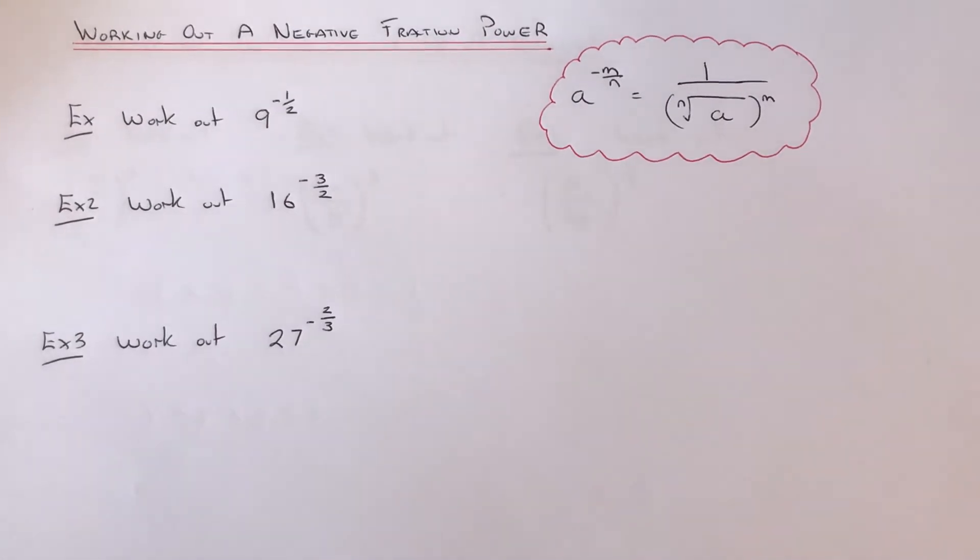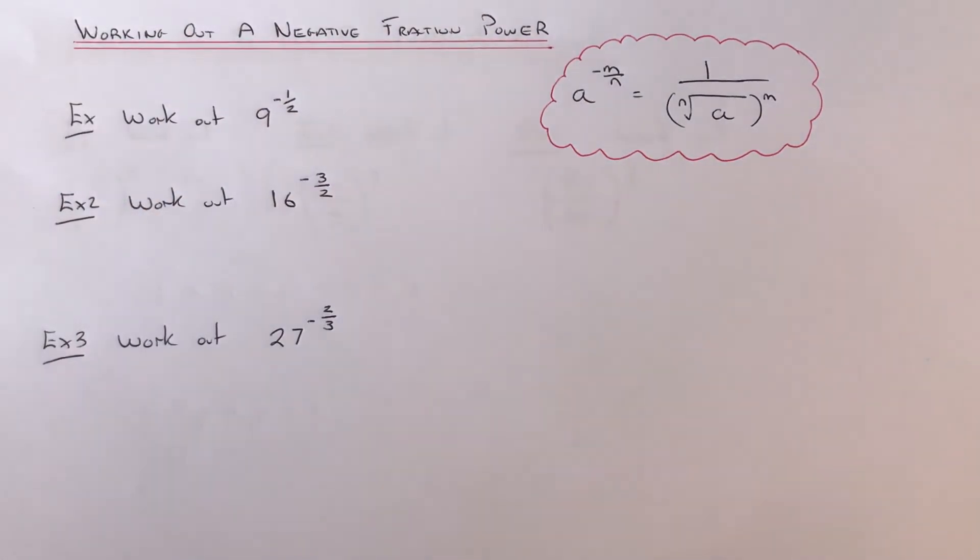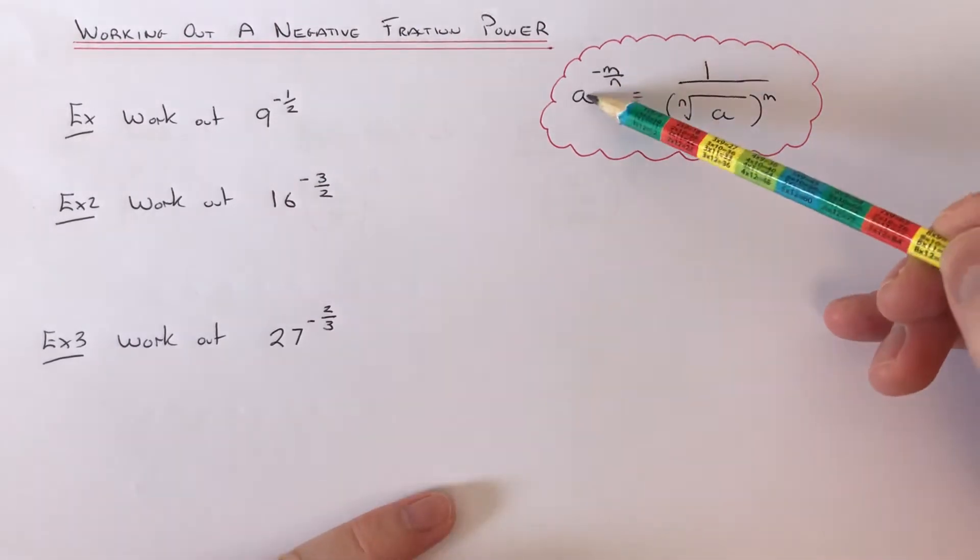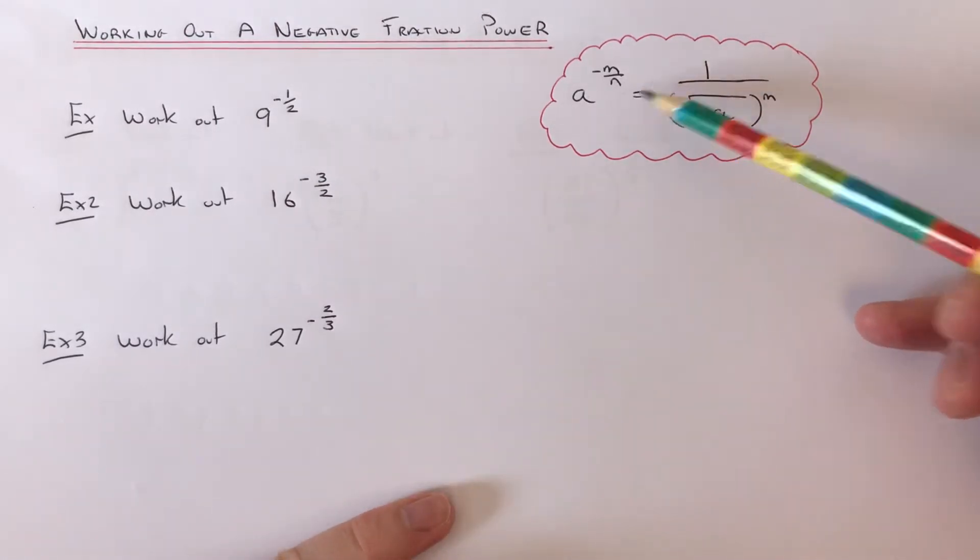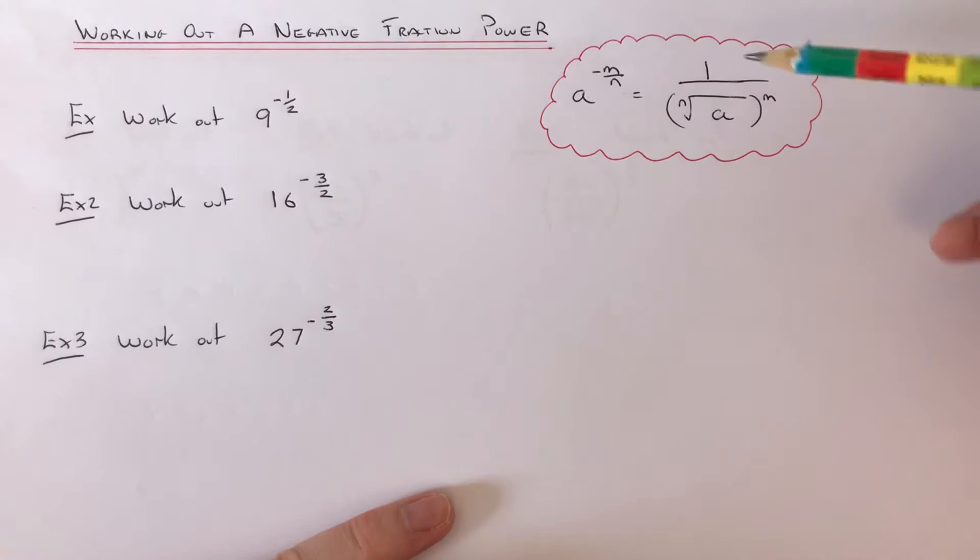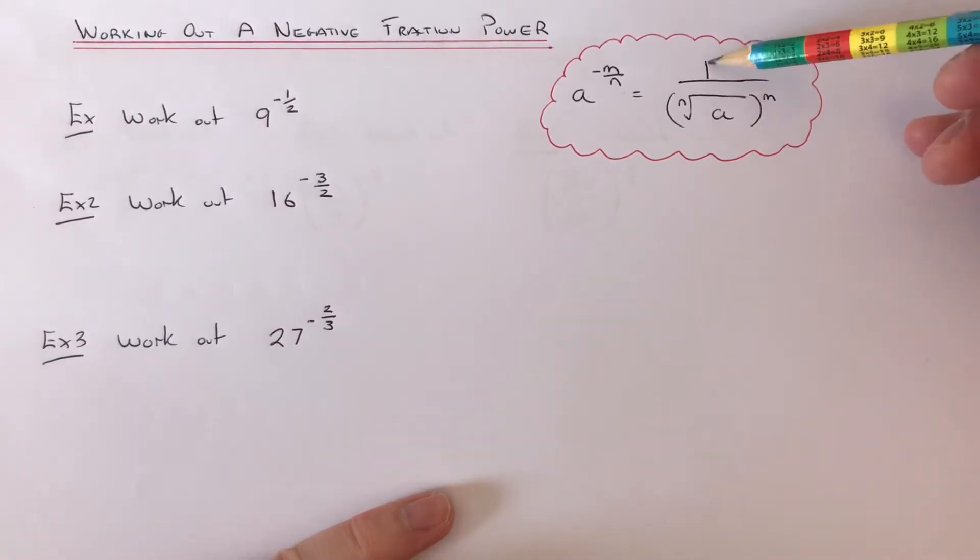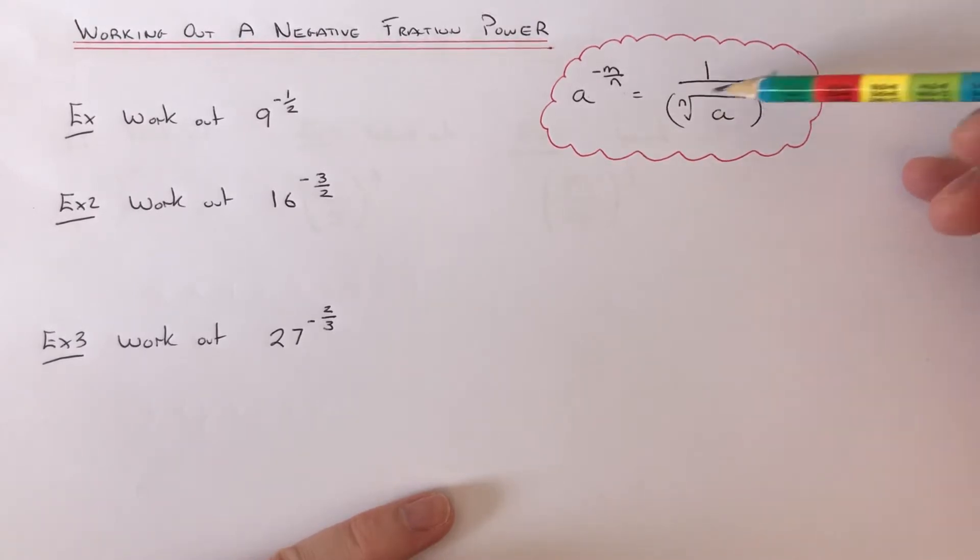Hi guys, welcome back. This is Maths 3000. Today I'm going to show you how to work out a negative fraction power. So if we have a to the power minus m over n, what you need to do then is write it as a fraction with 1 on the numerator, and then on the denominator write the base number a, put a root over it, put the denominator on the root, and the numerator on the outside.